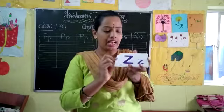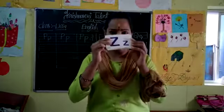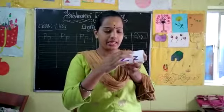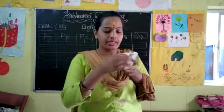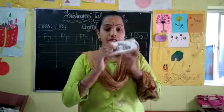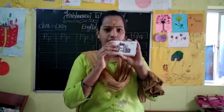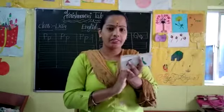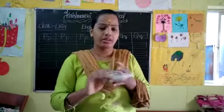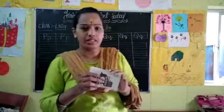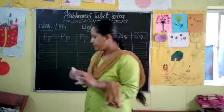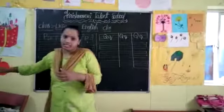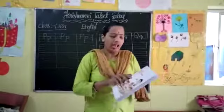And the next last letter is Z. See here, capital Z, small z. Z for zoo. Z for zoo. Claps children, everyone do claps. Today we have revised all the alphabets — uppercase letters and lowercase letters also.